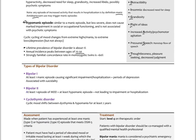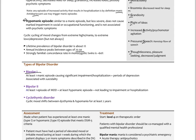Bipolar I involves at least one manic episode causing significant impairment and/or hospitalization, with periods of depression, and has a very high rate of suicidality. Bipolar II involves at least one major depressive episode and at least one hypomanic episode not leading to impairment or hospitalization. Cyclothymic disorder is like a dysthymia equivalent for bipolar — a cyclic mood shift between dysthymia and hypomania for at least two years.